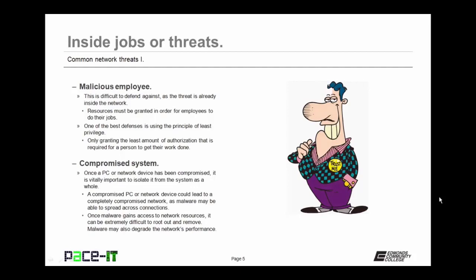First up is malicious employees. We may not know the reason why they're malicious, but they are difficult to defend against as they are already inside the defenses of the network, and resources have been granted to them in order for them to be able to do their job. One of the best defenses against malicious employees is using the principle of least privilege — only granting the least amount of authorization that is required for a person to get their work done. That's the best defense against a malicious employee.